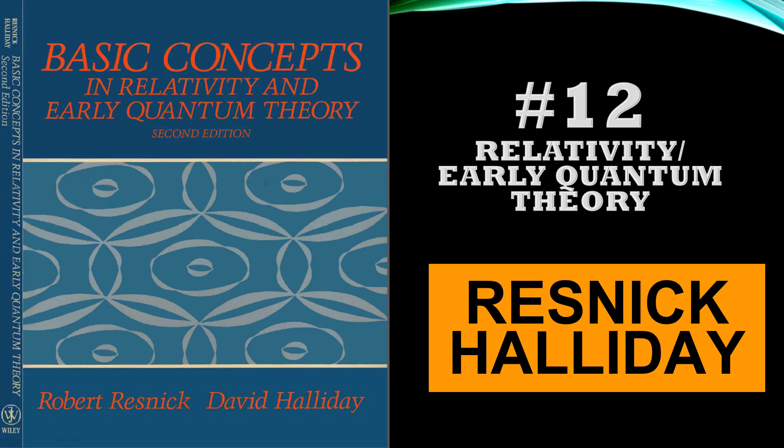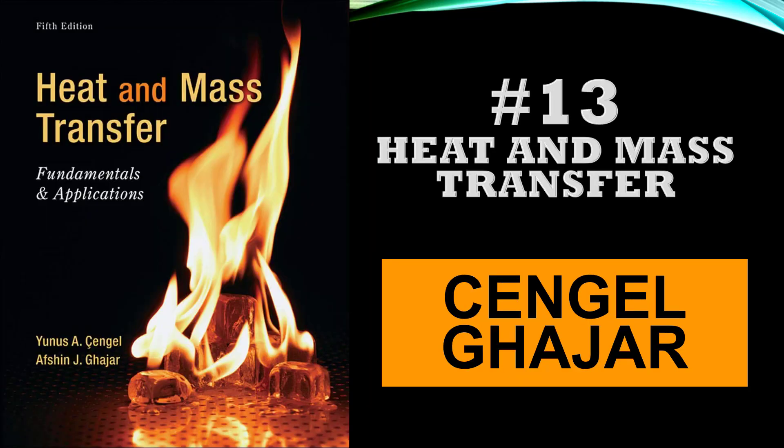This is another book by Resnick and Halliday — different from their very popular general physics book. This one is Relativity: Basic Concepts in Relativity and Early Quantum Theory. I studied especially the section on Rutherford scattering from this — why the number of particles scattered would be proportional to thickness to the power 1 for the Thomson model, and proportional to the square root of thickness for the Rutherford model. That part on Rutherford scattering is given nicely, and it's a nicely written book.